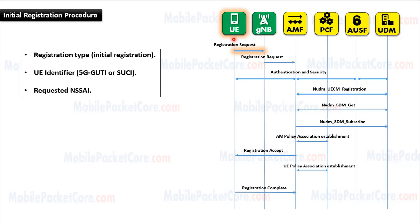First, the UE sends a registration request message to the gNodeB. This message includes the registration type, which is equal to Initial Registration, and the UE identifier, which is the 5G GUTI.